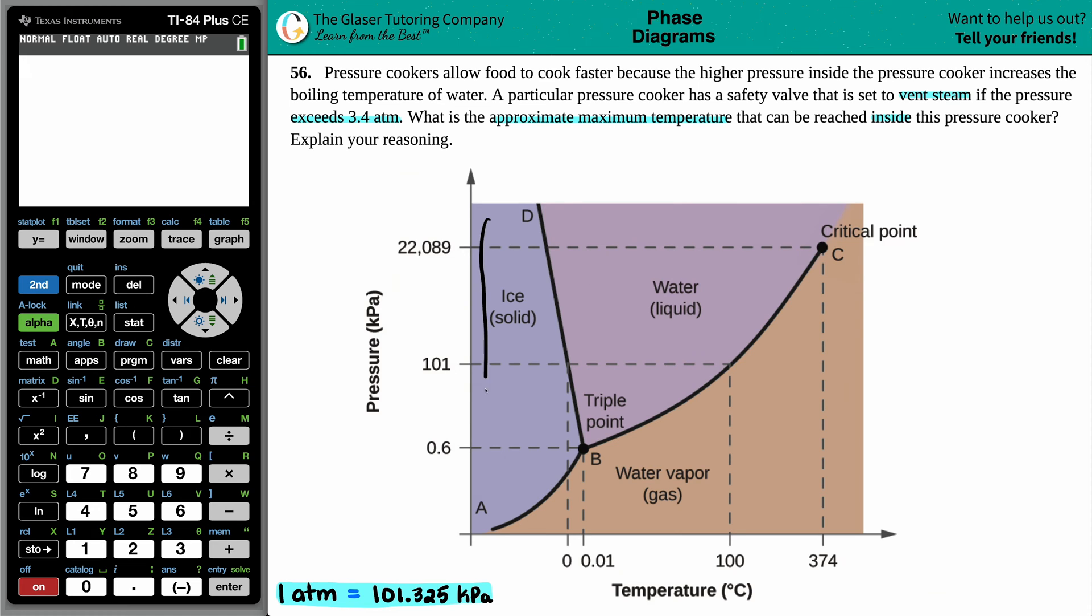Just know that the deep purple here is every time that water or H2O is going to be in the solid form, aka ice. This lavender-ish color is when water is going to be in its liquid phase, and then the brown on the bottom is where H2O will be in the vapor phase, aka a gas.